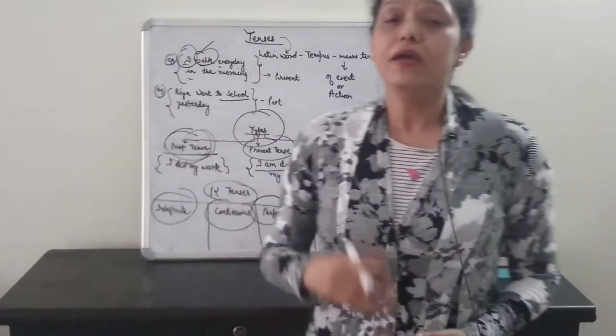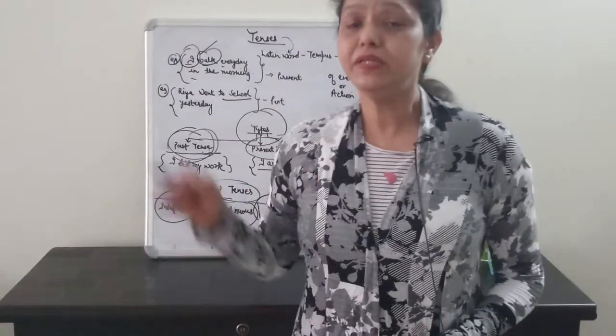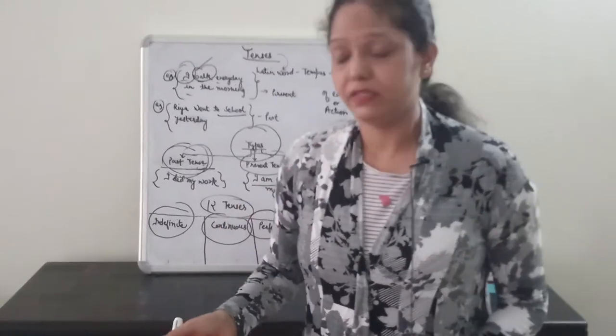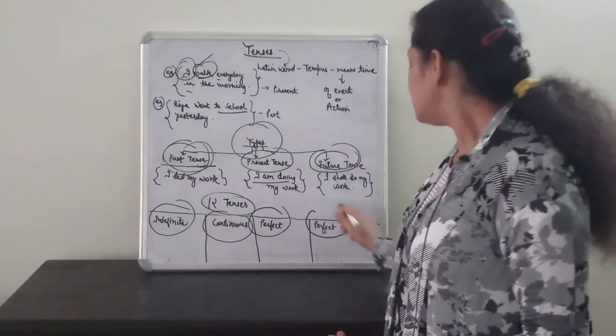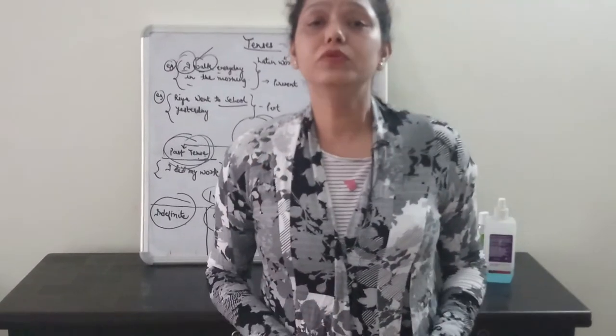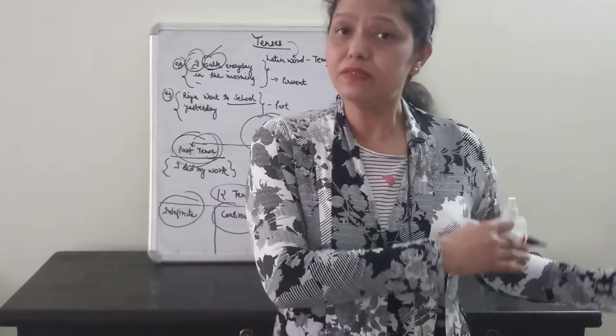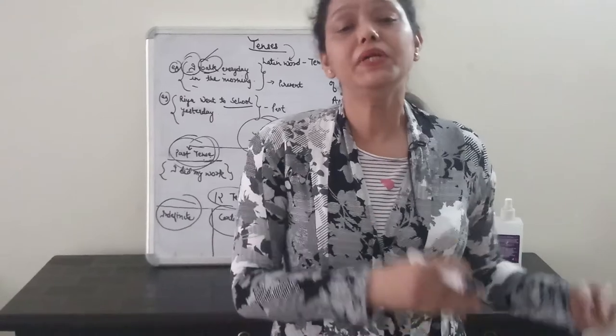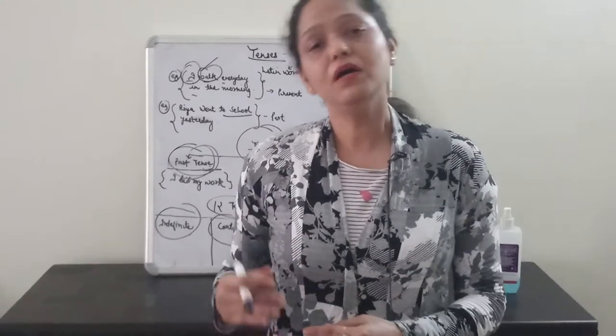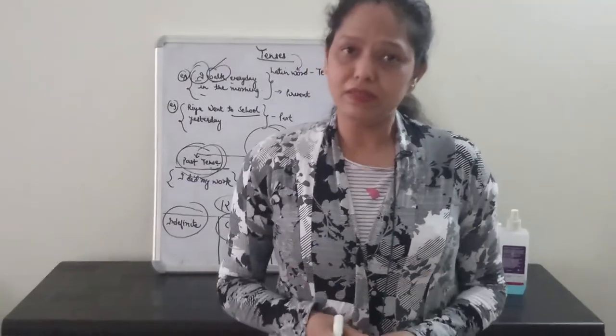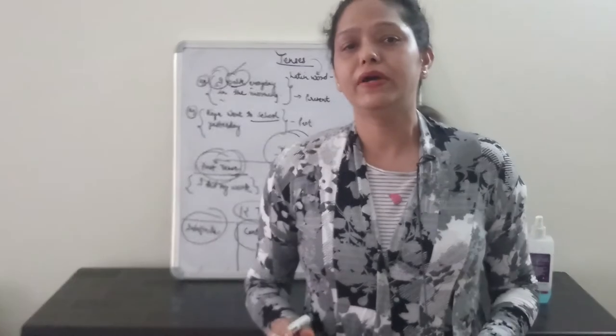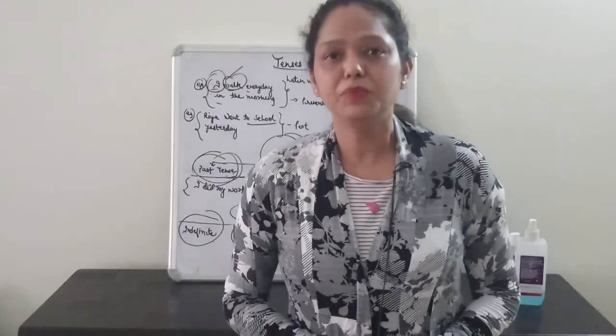In the similar way, we see that perfect means that the action has been completed. And perfect continuous means that it talks about two actions: an action that has started in the past time, but is also going on in the present time. So, we can say that there are overall 12 kinds of tenses. Thank you very much.